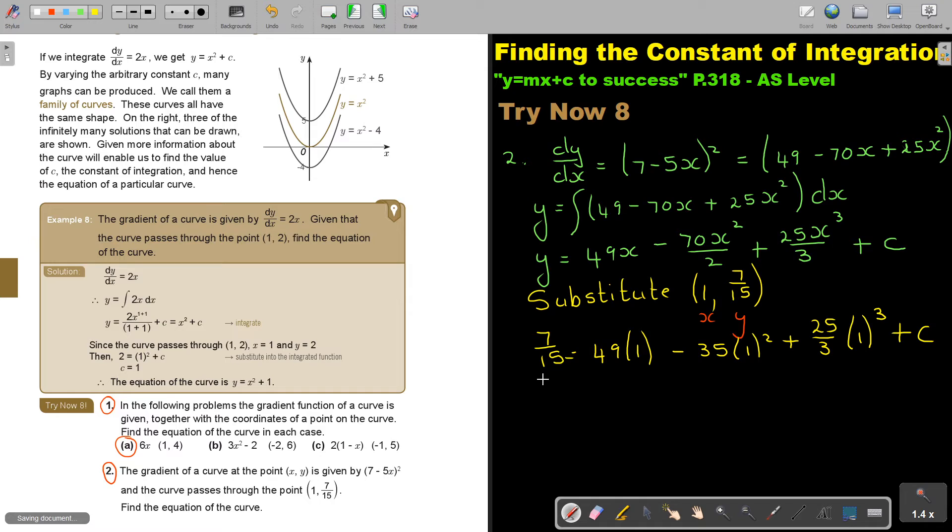And if I substitute that, 7 over 15, I'm going to say minus 49 plus that 35, I'm taking to the other side of the equation, minus 25 over 3, and that will give me value of c. Just press it on your calculator, so 7 abc 15 minus 49 plus 35 minus 25 abc 3, and that will give me an answer of negative. Therefore, c is negative 21 and 13 over 15.